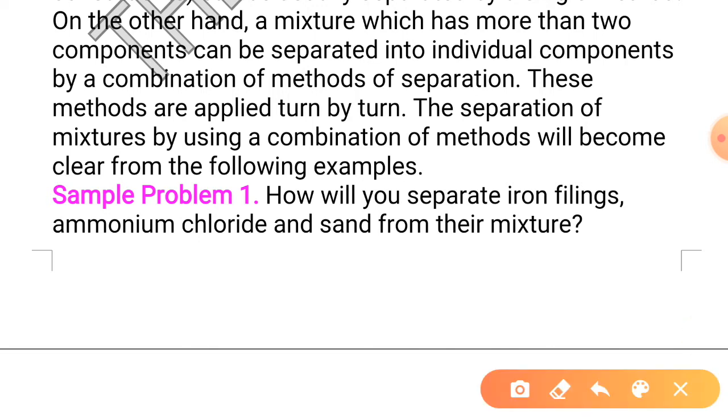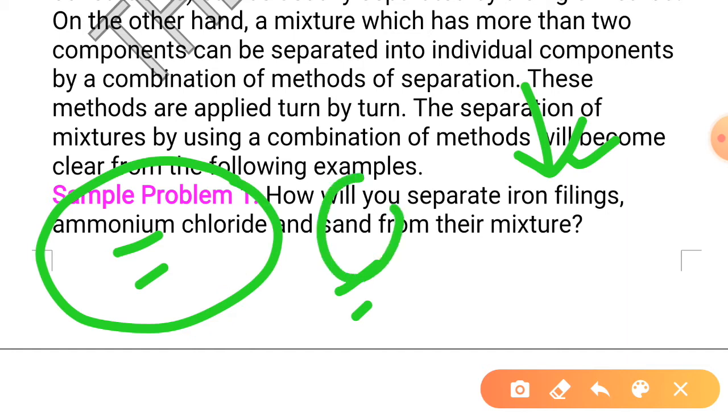Keep in mind the component will decide what separation technique we have to use. We are having iron filings, ammonium chloride and sand. Iron filings are attracted by a magnet, so a magnet can be used to remove iron filings first. When iron filings are removed, then ammonium chloride and sand are remaining. We know that ammonium chloride can undergo sublimation, so we will heat it and by sublimation we will separate ammonium chloride and sand will be left behind.